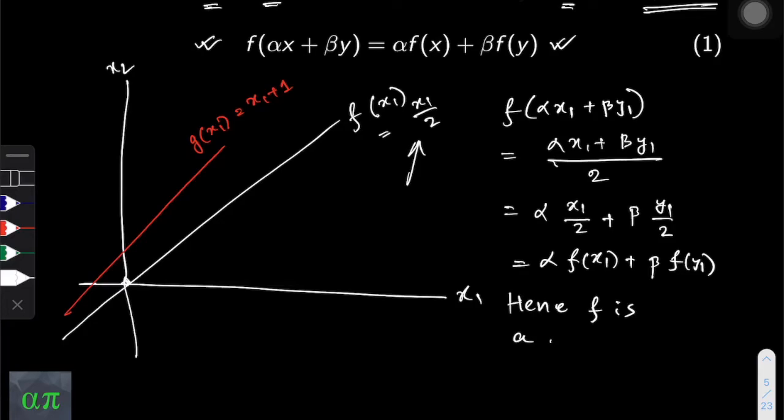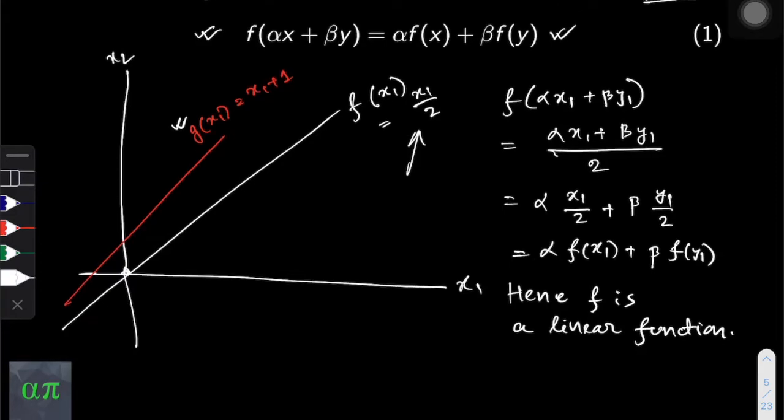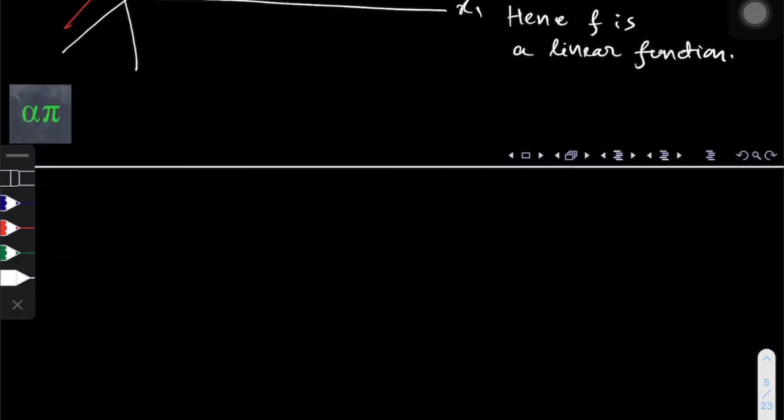Now let's see whether g is a linear function or not according to this definition. For g we need to show g of alpha x₁ plus beta y₁.